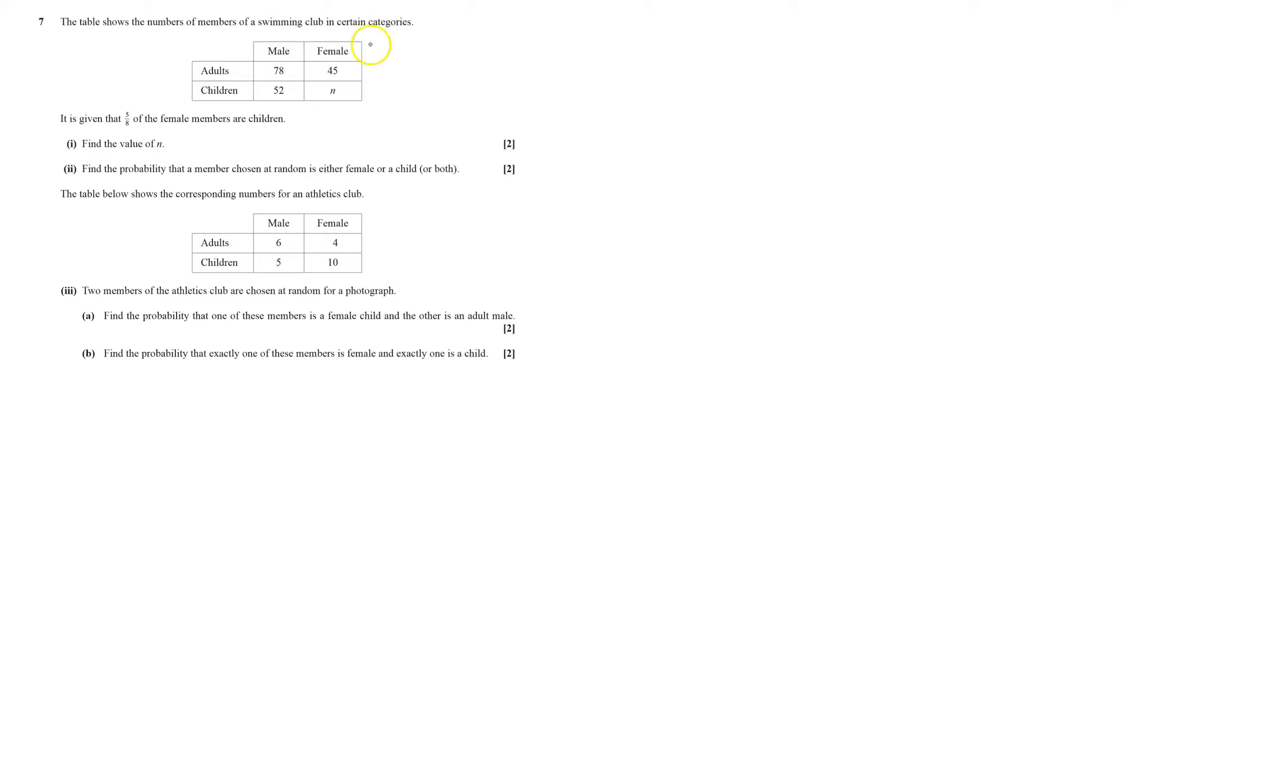I've got members of a swimming club categorized. What makes it worth putting a total in? That would be 123, that would be 130, and I can work out that.